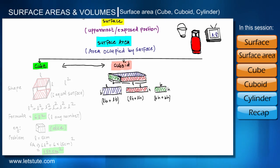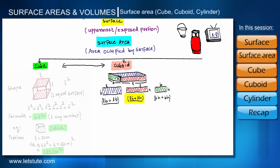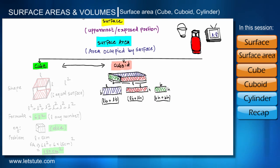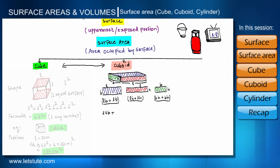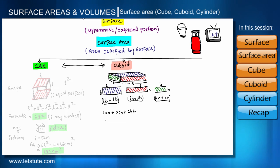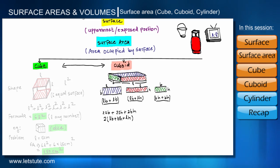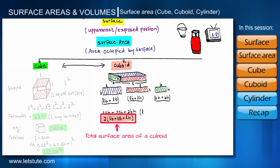So the total surface area of the cuboid is: LB + LB for top and bottom, LH + LH for front and back, and BH + BH for left and right. This gives us 2LB + 2LH + 2BH. Taking 2 as a common factor, the formula becomes 2(LB + BH + LH). This is the total surface area of a cuboid with length L, breadth B, and height H.